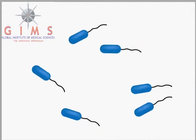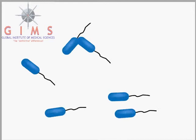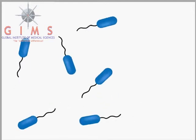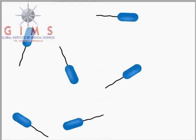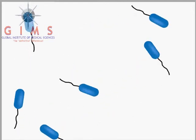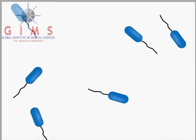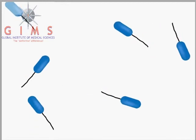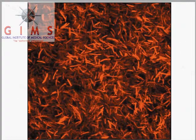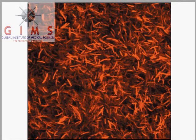Bacteria are typically thought of as unicellular, but in nature, many, if not most bacteria form specialized, surface-attached communities called biofilms. This micrograph depicts a biofilm of bacteria collected from a rock surface in a Yellowstone hot spring. Even in aquatic environments, bacteria are found mainly associated with surfaces.